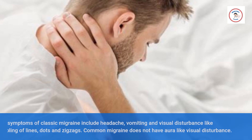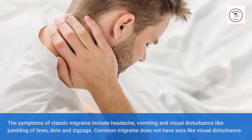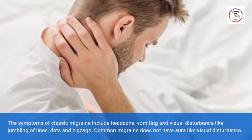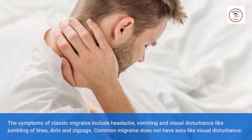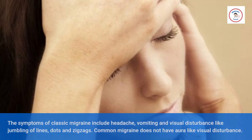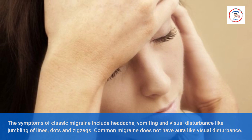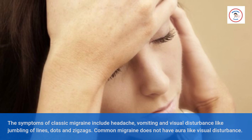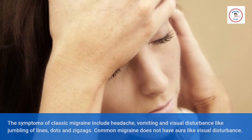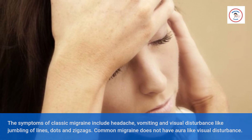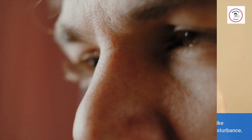The symptoms of classic migraine include headache, vomiting, and visual disturbance like jumbling of lines, dots, and zigzags. Common migraine does not have aura-like visual disturbance.